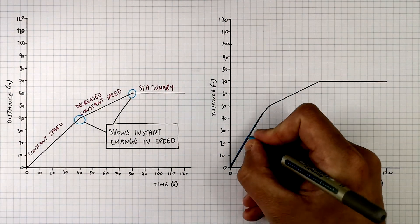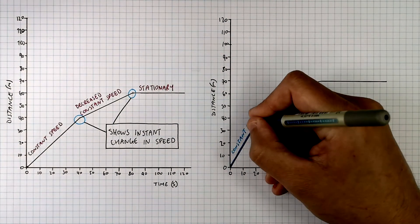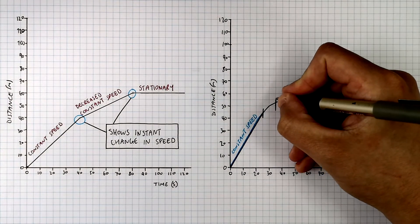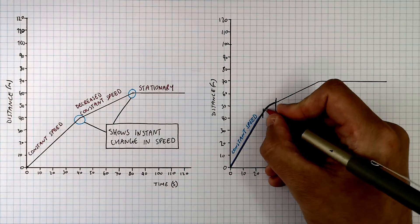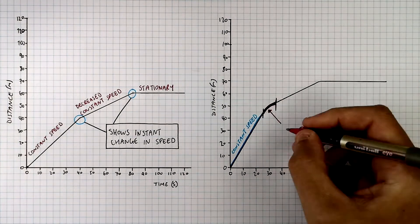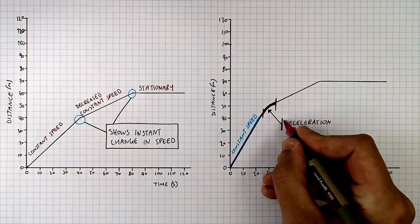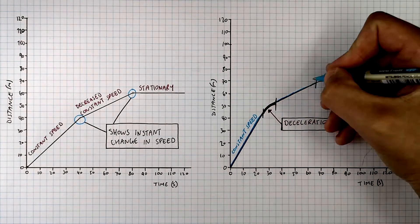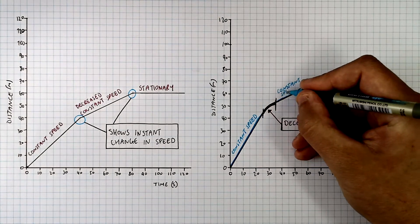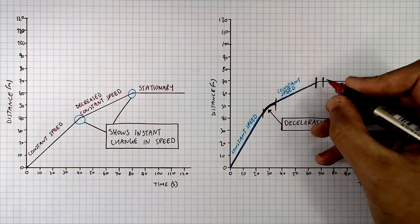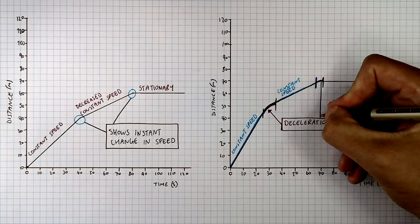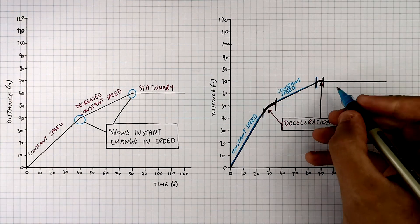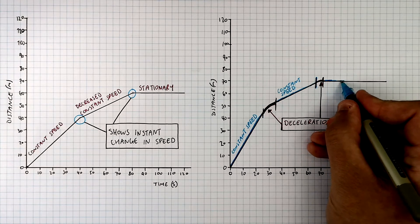This part of the graph shows a constant speed. However, this bit here has a curvature to it — there is a curved part of the graph. This curve shows a deceleration, a slowing down in speed. And then the object continues at a constant speed, before you've got another curve in the graph showing another area of deceleration.